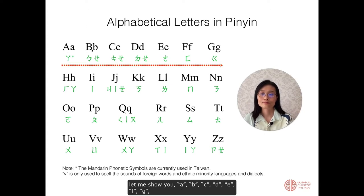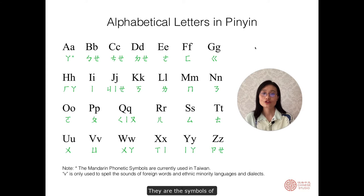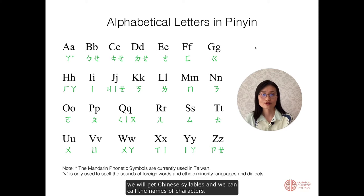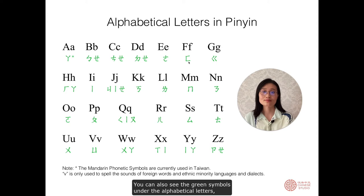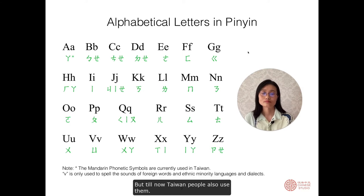Let me show you: A, bo, ci, de, e, fu, ge — totally different. They have different names in different languages. They are the symbols of pinyin. If we combine them together, we will get Chinese syllables, and we can call the names of characters. You can also see the green symbols under the alphabetical letters — they are the phonetic marks used before, and then the alphabetical letters replaced them. But Taiwan people still use them today.